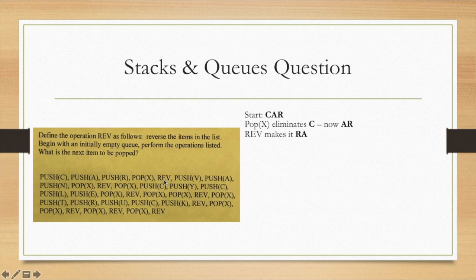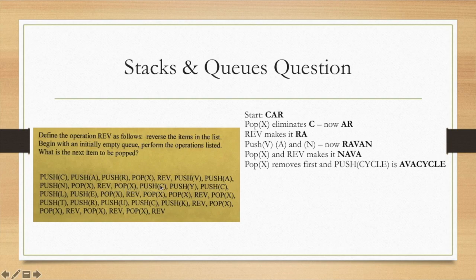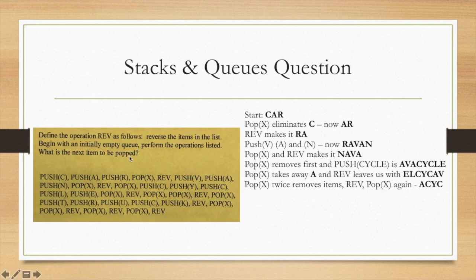Now we're on to pushing V, A, N. So it's R, A, V, A, N. You pop X, so that's R. So now it's A, V, A, N. And when you reverse it, it's N, A, V, A. You pop X again to get A, V, A. And then you're pushing C, Y, C, L, E, or cycle. So that's like A, V, A, cycle. Popping X will remove that first A. Then you reverse it. So it's now E, L, C, Y, C, A, V. You've got to keep all this stuff. It's a little bit tricky, so you've got to just keep yourself in order basically. Then we pop X twice here, reverse, and then pop X again. So that becomes C, Y, C, A, V. You reverse it: V, A, C, Y, C. And remove the V, so it's A, C, Y, C.